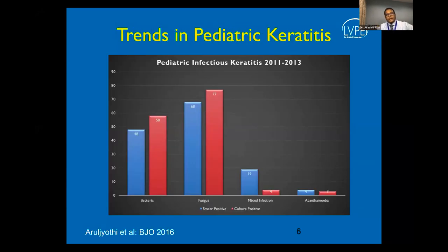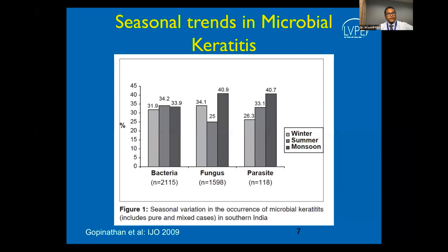Amongst the organisms that were positive, it was found that Fusarium and Aspergillus, which are basically the hyaline filamentous fungi, are much more prevalent, and fungus is a significant proportion of all the infectious keratitis presenting to the ophthalmic clinic. There are distinct seasonal trends, and studies from South India and China show a seasonal prevalence of more fungal keratitis in winter and monsoons.